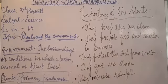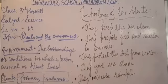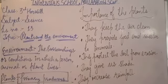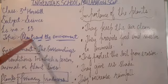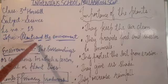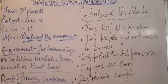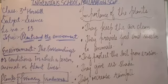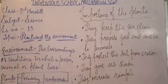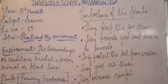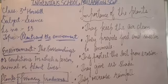Assalamualaikum, my dear students. How are you all? I hope you are all fine and doing great. My dear kids, today we are going to learn chapter number 13 of your textbook, which is about plants and the environment. In this chapter, we are going to learn about what is an environment, what it is made up of, how plants keep our environment green, and the different ways by which we can save our trees and forests. These are the things we are going to learn in this chapter. So, let's get started.